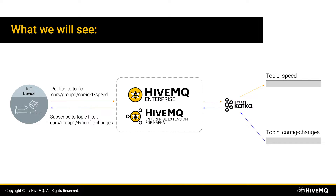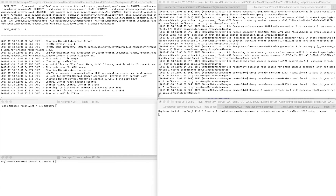We will also see the way back to the devices — we will read messages from the Kafka topic config changes and distribute them to the devices. I assume that you have a running HiveMQ like I have here. That is a running HiveMQ 4.2.1.